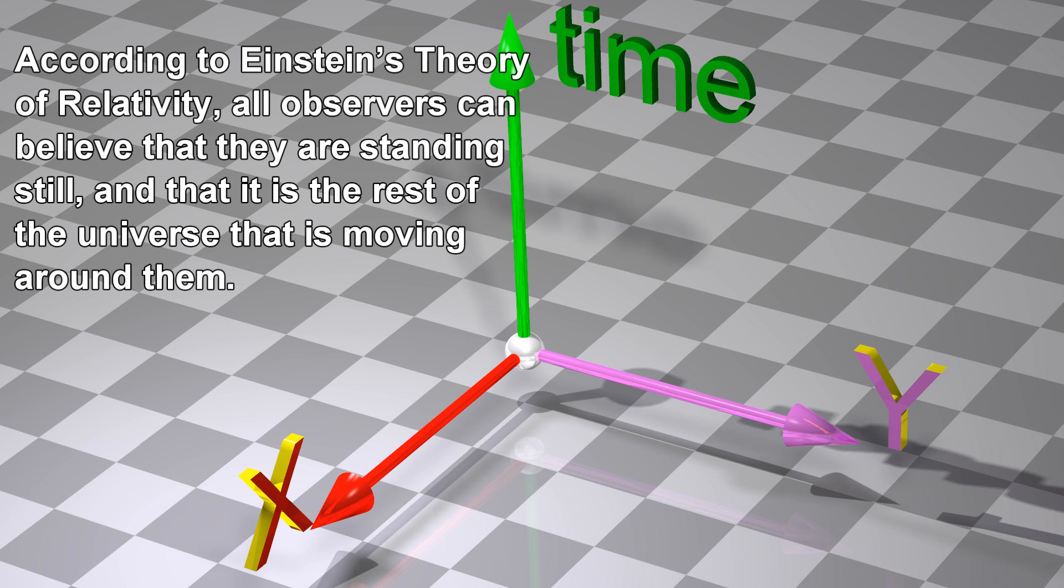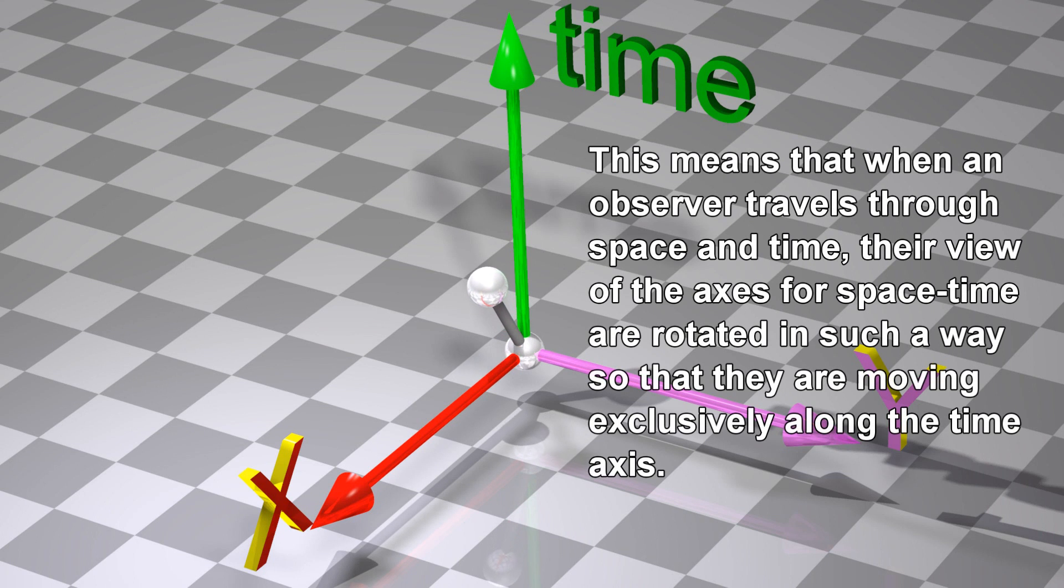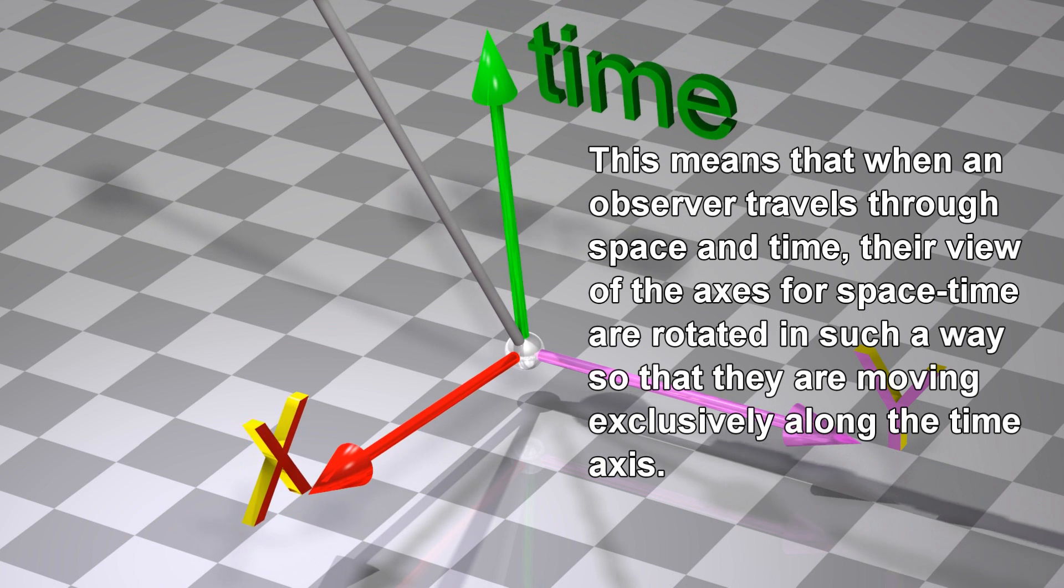According to Einstein's theory of relativity, all observers can believe that they are standing still, and that it is the rest of the universe that is moving around them. This means that when an observer travels through space and time, their view of the axes for spacetime are rotated in such a way so that they are moving exclusively along the time axis.